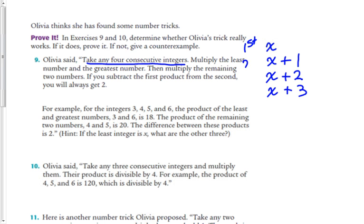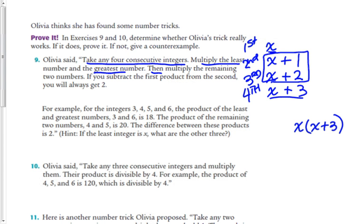So in order, this would be the first, the second, the third, and the fourth. Now her claim is that if you multiply the least and the greatest, and then multiply the remaining 2 numbers, if you subtract the first product from the second, you will always get 2. Well, multiplying the least and the greatest, that would be multiplying these 2. So if we take x times quantity x plus 3, and then she says multiply the remaining 2 numbers, that would be those 2. So x times quantity x plus 1 times quantity x plus 2. She says if you subtract the first product from the second, you will always get 2. So she's saying that this equals 2.